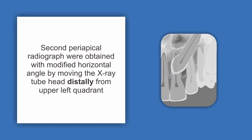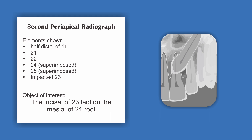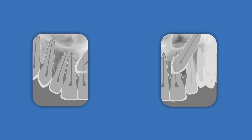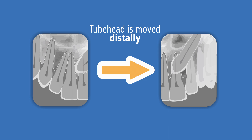We take a second periapical radiograph obtained with a modified horizontal angle by moving the x-ray tube head distally from the upper left quadrant. Here we can see the distal half of the upper right central incisor, upper left central incisor, lateral incisor, first premolar, second premolar, and the impacted canine. The impacted canine incisal is now lying on the mesial of the upper left central incisor. Comparing the two radiographs: the first showed the upper right quadrant, the second shows the upper left quadrant, so the tube head was moved distally toward the posterior of the upper left quadrant.